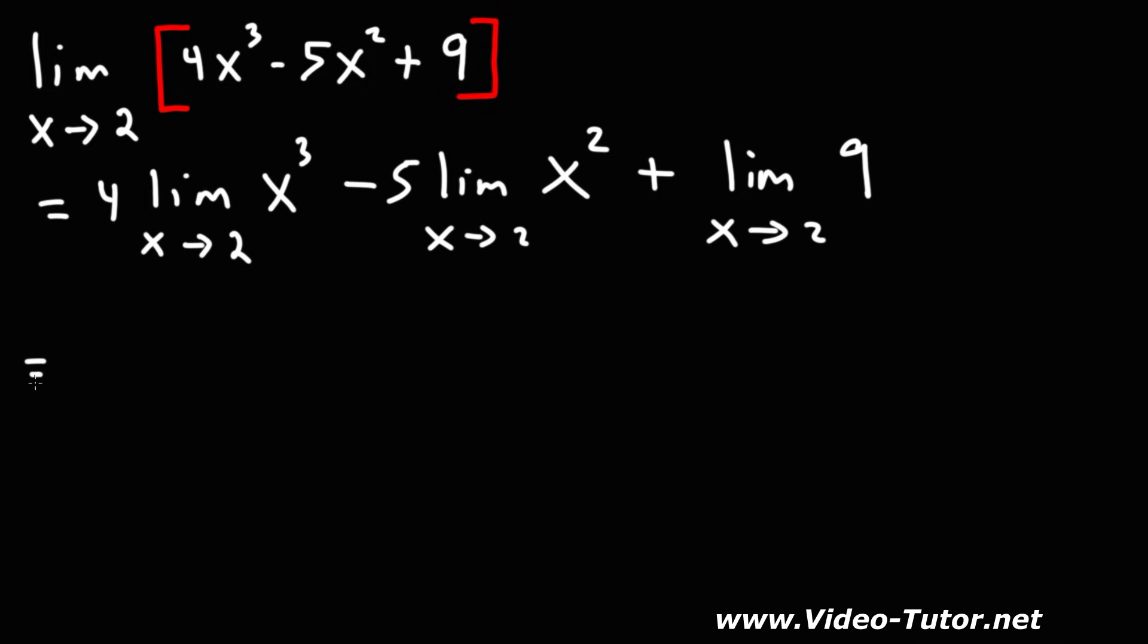Once you break it up like this, you can now use direct substitution. So the limit as x approaches 2 for x cubed, that's just going to be 2 to the third power. The limit as x approaches 2 for x squared will simply be 2 squared. And the limit as x approaches 2 for the constant 9, that's going to remain 9 because there's no x variable associated with the 9.